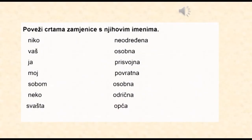Vaš sljedeći zadatak je da povežete crtama zamjenice sa njihovim imenima. A evo i koje su to zamjenice: niko, vaš, ja, moj, sobom, neko, svašta.